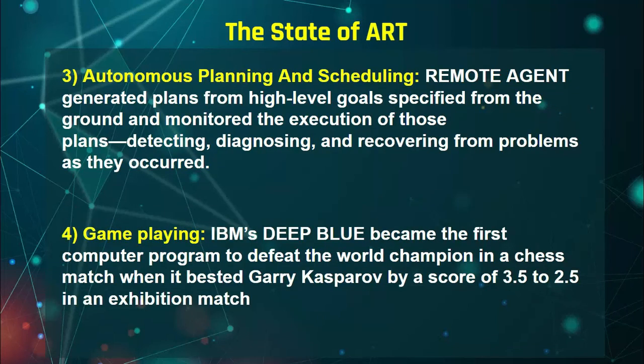The third example is autonomous planning and scheduling. You know about voice assistants like Apple Siri and Amazon Echo — these are examples of autonomous planning. You just give a voice command, like setting an alarm, and the system handles it automatically. Remote agents generate plans for high-level goals specified from the ground.